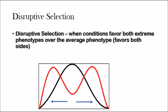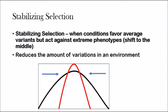Disruptive selection is when conditions favor both extreme phenotypes over the average phenotype. Let's say this was brown, this was white, and this was black — disruptive selection would select the very extremes, so black and white over brown, pushing them to the two extreme phenotypes. Stabilizing selection is when conditions favor the average but act against the extreme phenotypes, shifting everything towards the middle. So if you have black and white, everything gets shifted towards brown. This reduces the amount of variance in the population, as variations are deleted from the population.